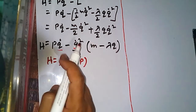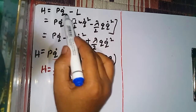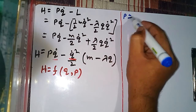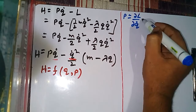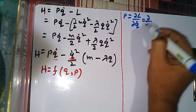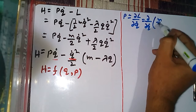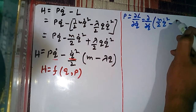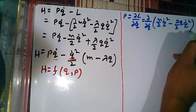To find q̇ in terms of p and q, we use the canonical momentum formula: p = ∂L/∂q̇. So p equals the partial derivative with respect to q̇ of L, which is (m/2)q̇² - (λ/2)q·q̇².